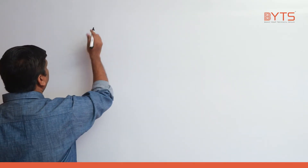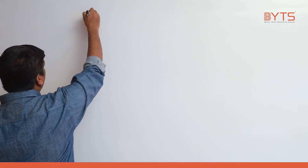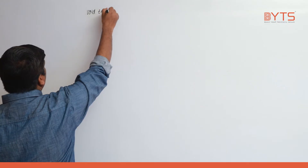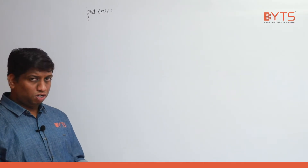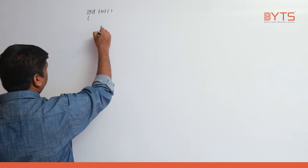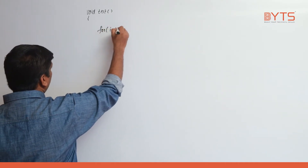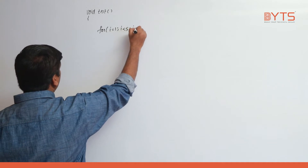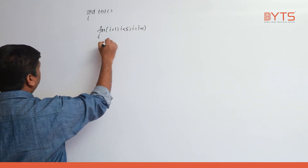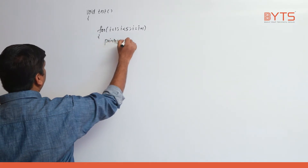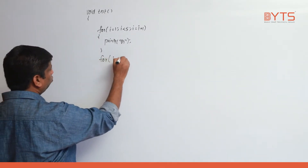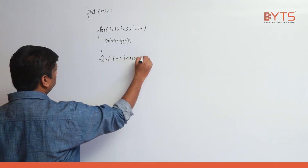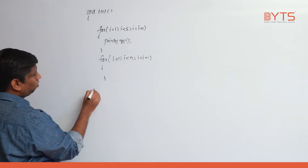We will be seeing some more interesting examples. Let us take a function called void test. We have a for loop: for i equal to 1, i less than 5, i equal to i plus 1, printf A. Next, another loop: for i equal to 1, i less than n, i equal to i plus 1, printf B.